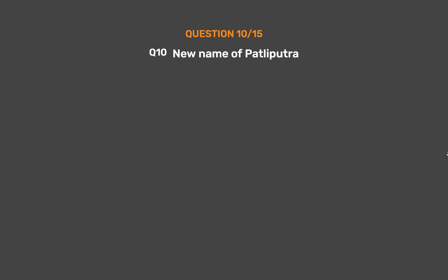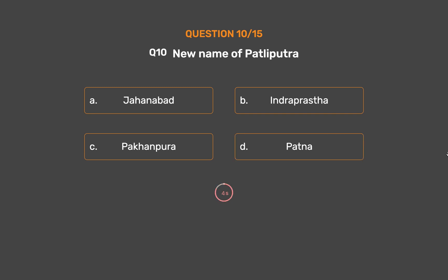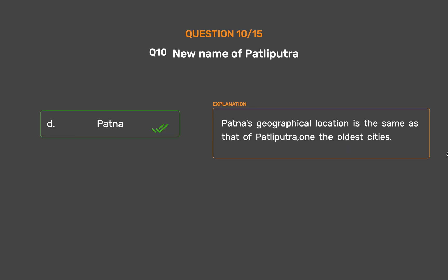Question No. 10. New name of Pataliputra. Option A: Jahanabad. Option B: Indraprastha. Option C: Pakhnapura. Option D: Patna. The correct answer is Option D: Patna. Patna's geographical location is the same as that of Pataliputra, one of the oldest cities.